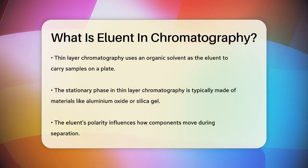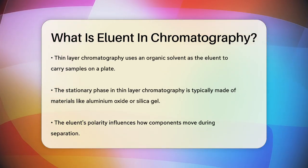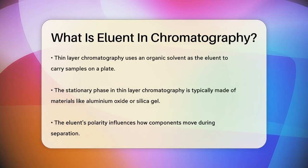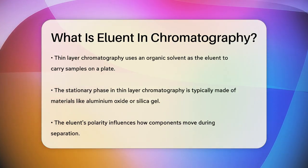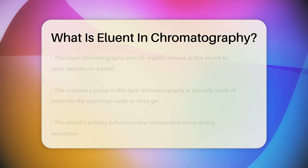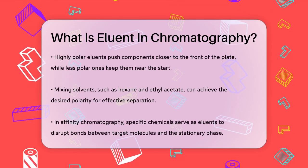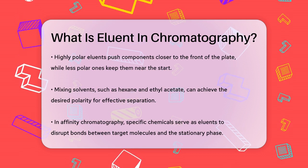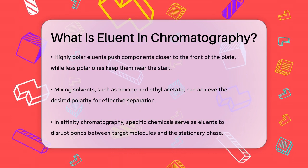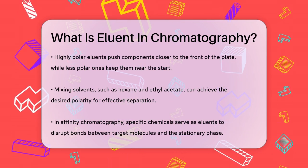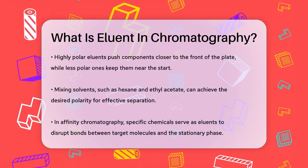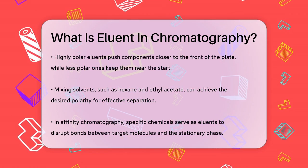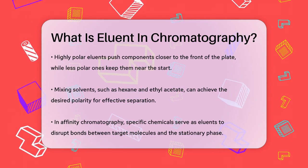The choice of eluent is really important because it affects how the components separate. If the eluent is highly polar, it will make the components move closer to the front of the plate, while a less polar eluent will keep them closer to the starting point. You can mix different solvents to get the right balance of polarity, like combining hexane and ethyl acetate.